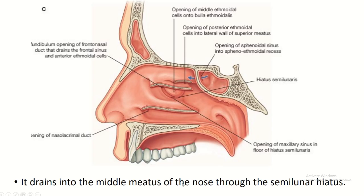The maxillary sinus drains into the middle meatus of the nose through the hiatus semilunaris. The middle meatus is a depressed area situated in the lateral wall of the nasal cavity. It has an elevated area above it known as the bulla ethmoidalis, and just below the bulla ethmoidalis is the hiatus semilunaris, where the maxillary sinus opens.